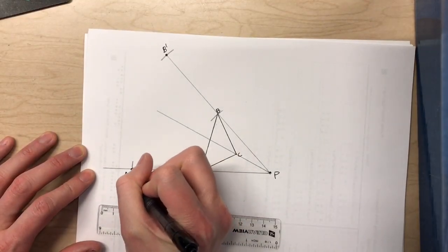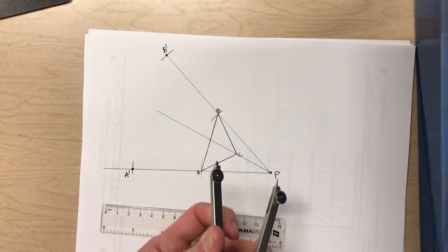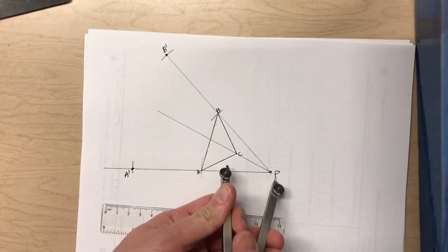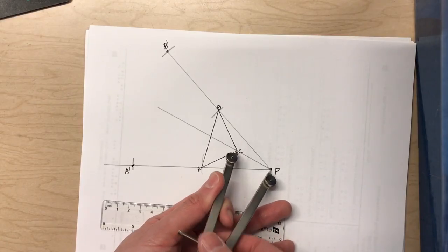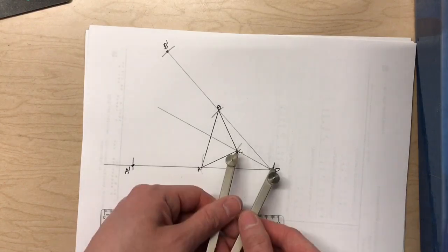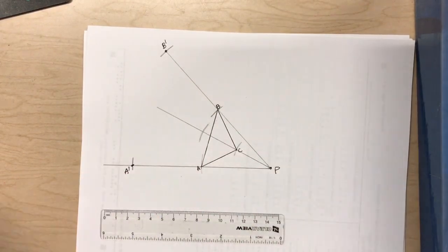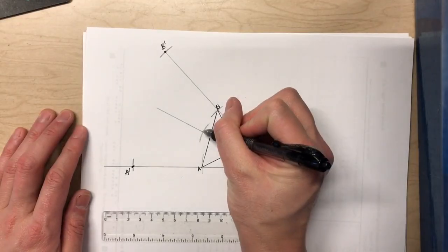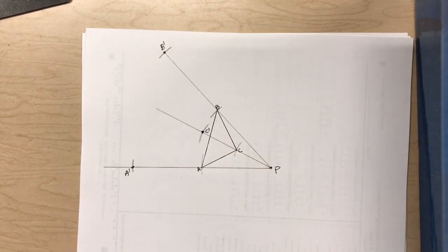And then for C, I'm going to take this distance from P to C right there and double it. And this point will be my C prime.